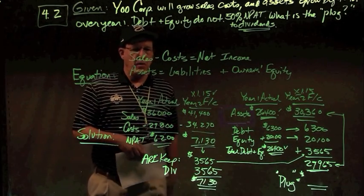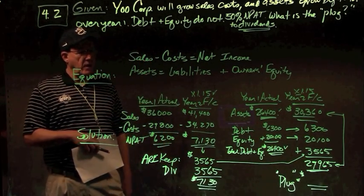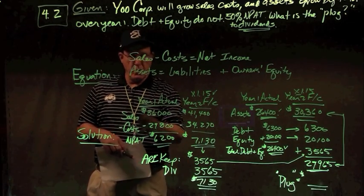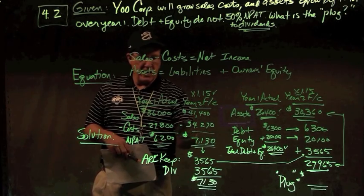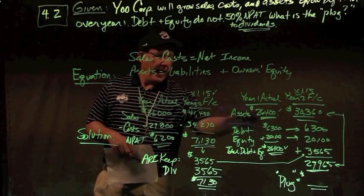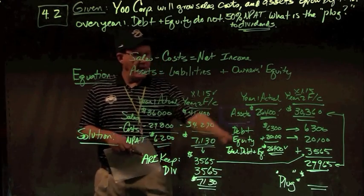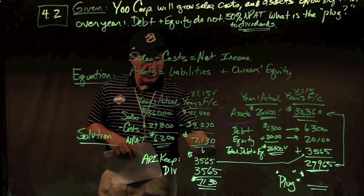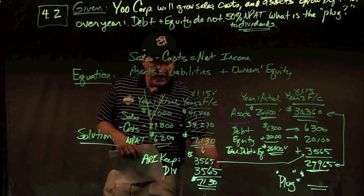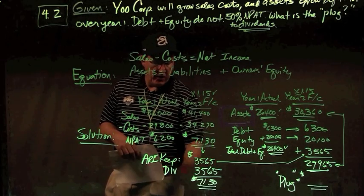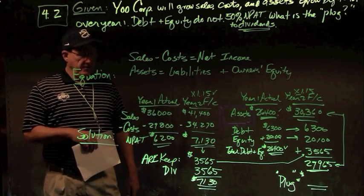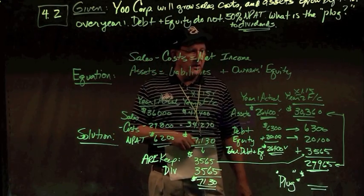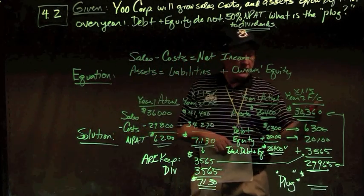So a little bit different than problem number one, sales minus costs equals net income as always, and assets must equal liabilities plus owner's equity. So just like in problem one, we multiply our sales by 1.15 and our costs by 1.15 and our assets by 1.15, but we do not multiply our debt and equity. We leave them low. So the other difference is in our net income of $7,130, we're going to keep half in additions to retain earnings, and we're going to give away half in dividends.